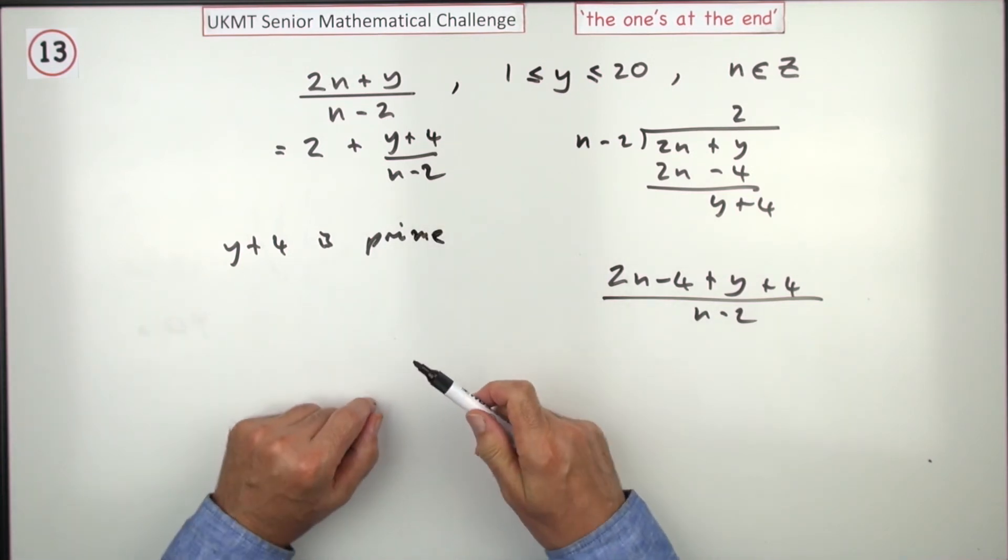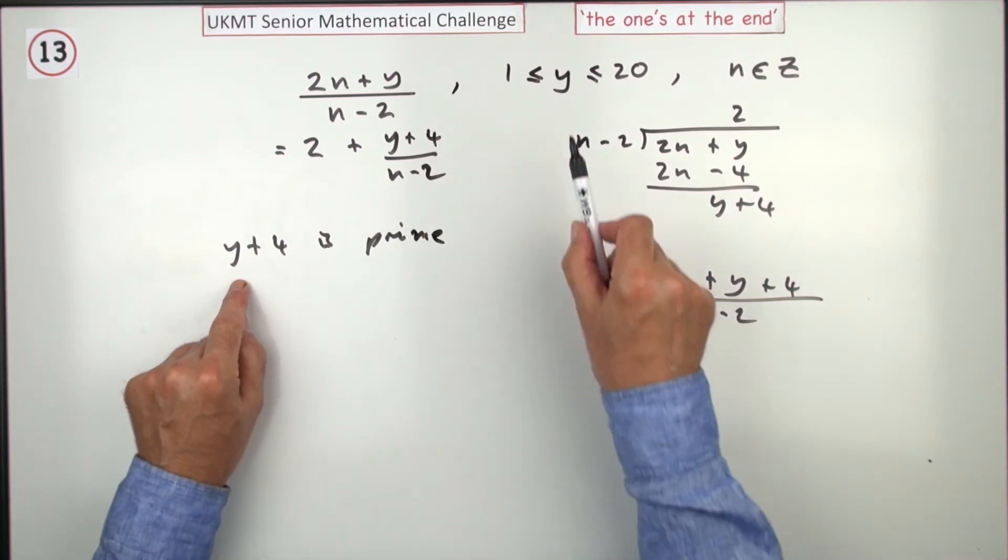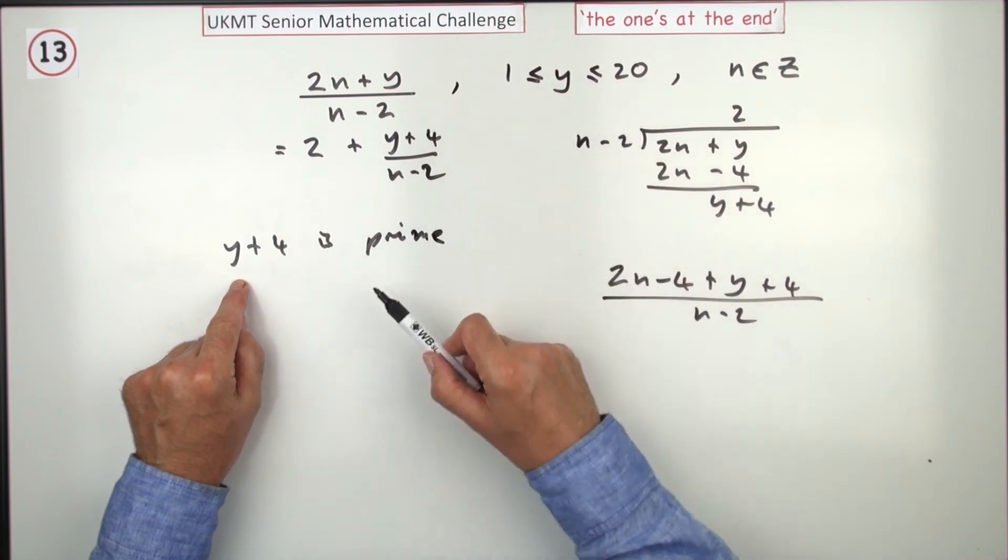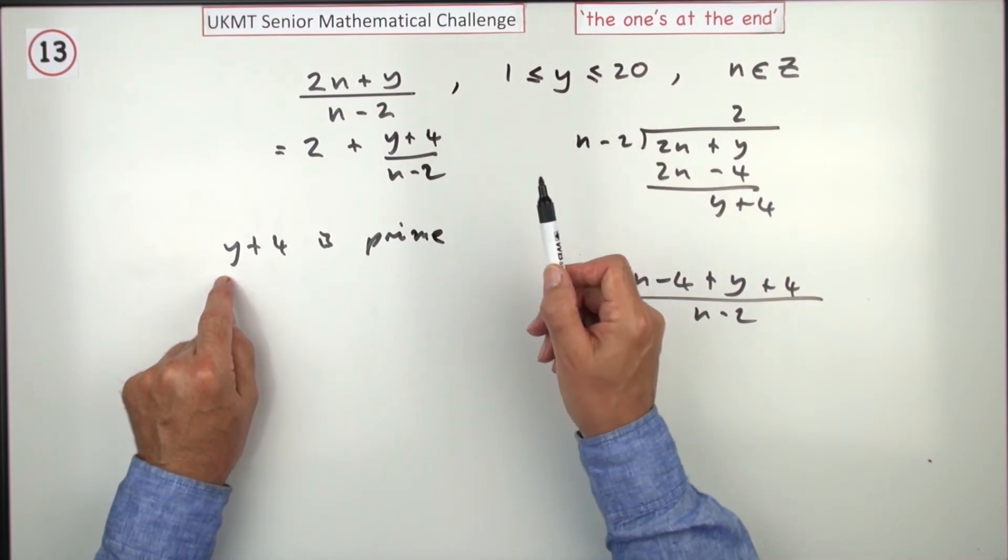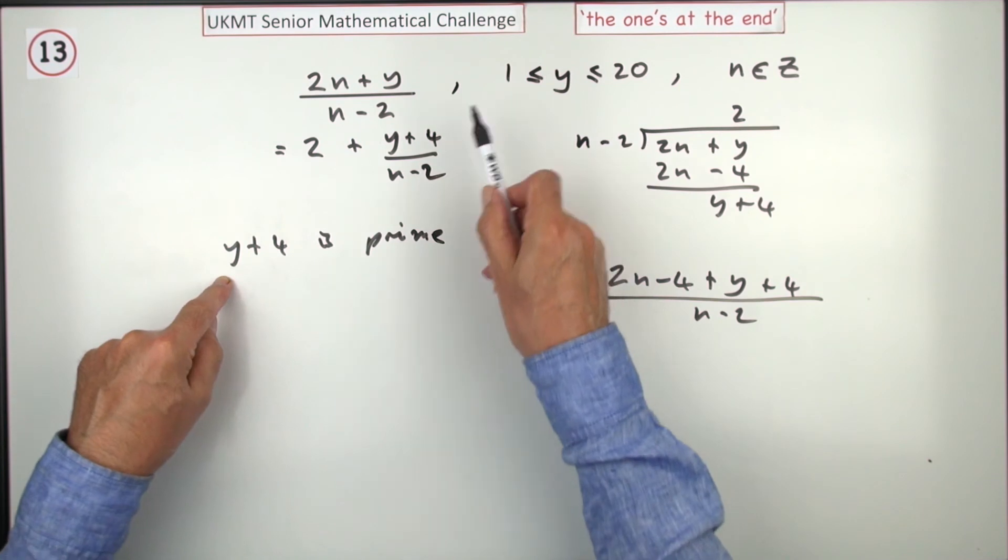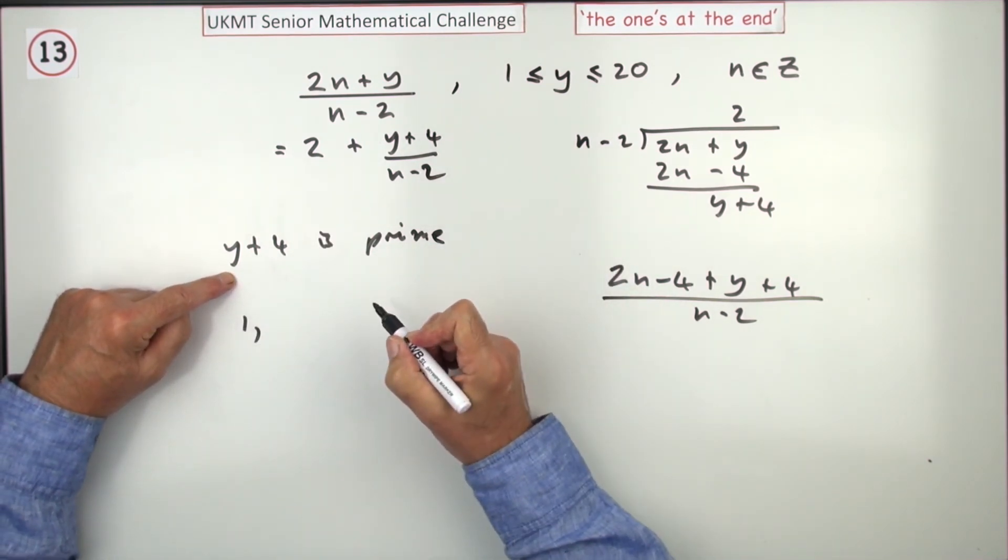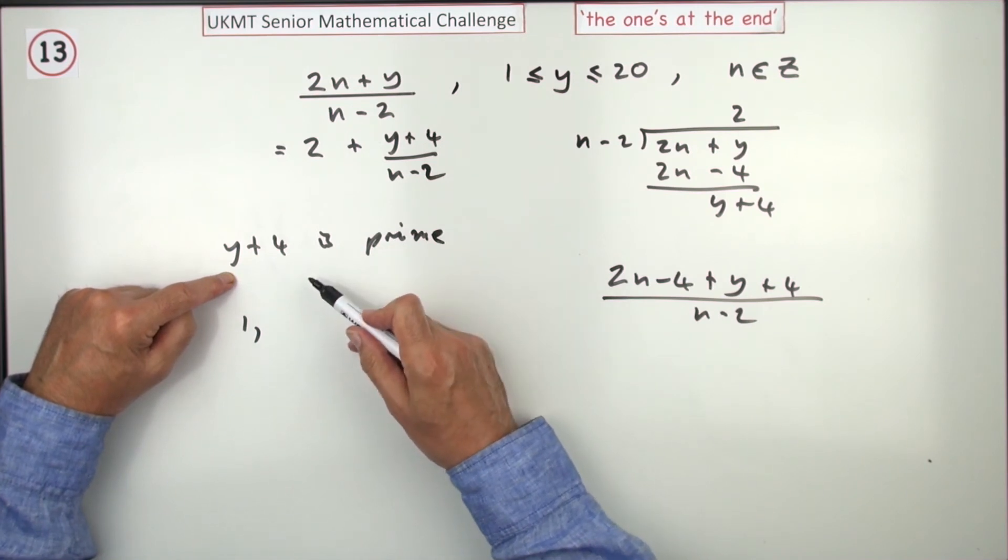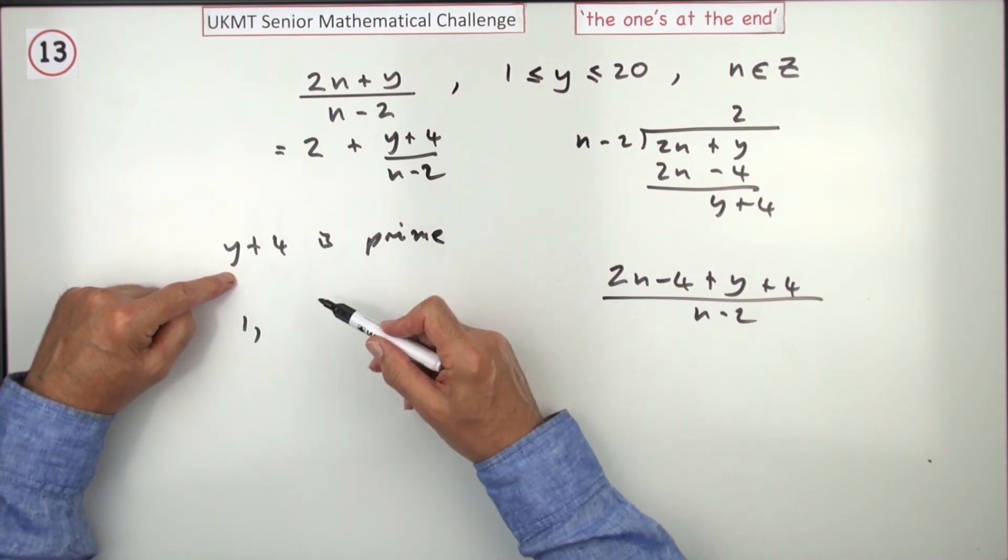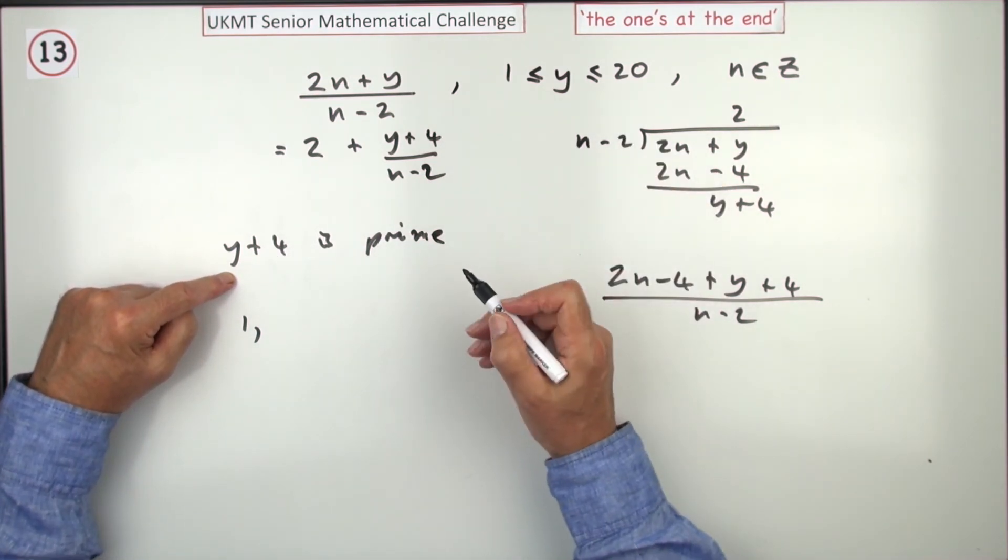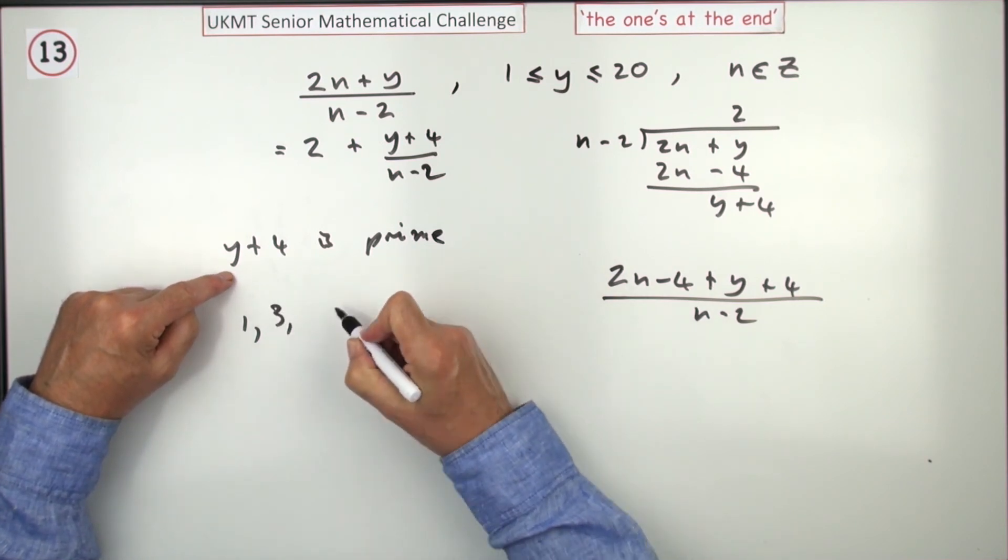Now it's just a case of figuring out all the way from 1 to 20, adding 4 on, how many of them give you a prime number? We'll start with 1. 1 and 4 is 5, so that's fine. Obviously, all the even ones are no use, because they're going to start at 6, so it's only the odd ones you need to consider. 3, that's fine, because that's a 7.